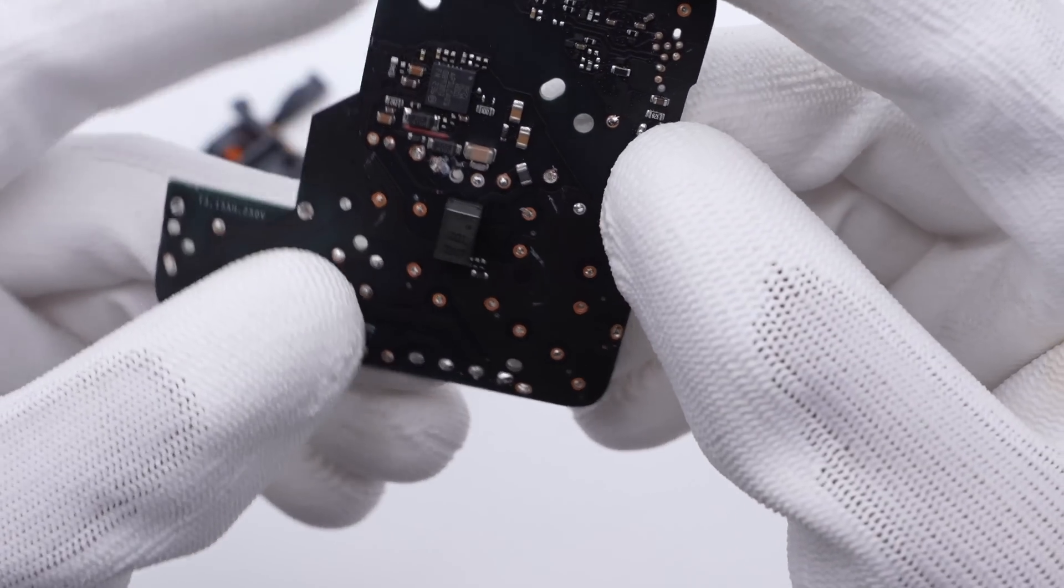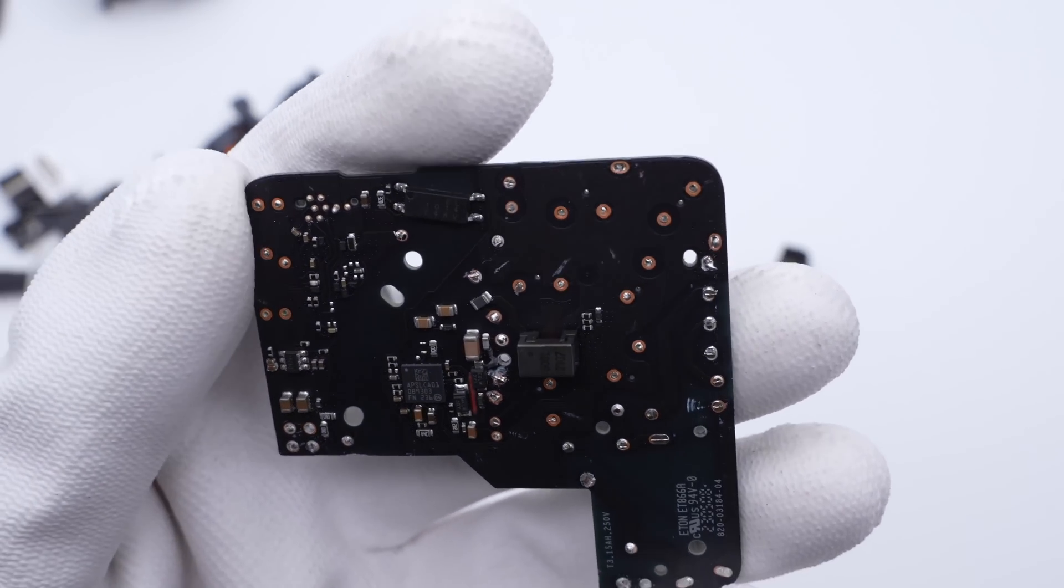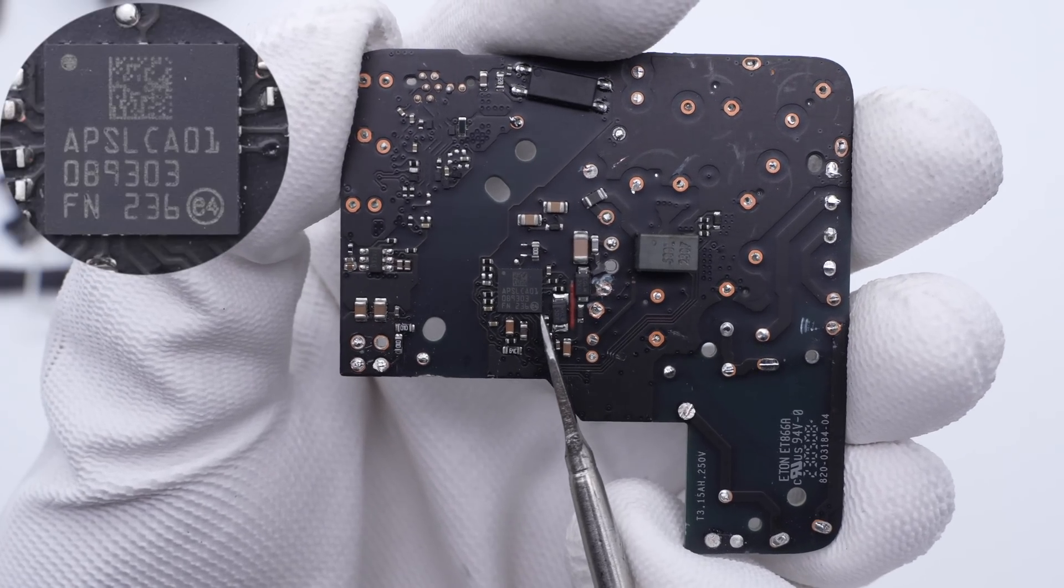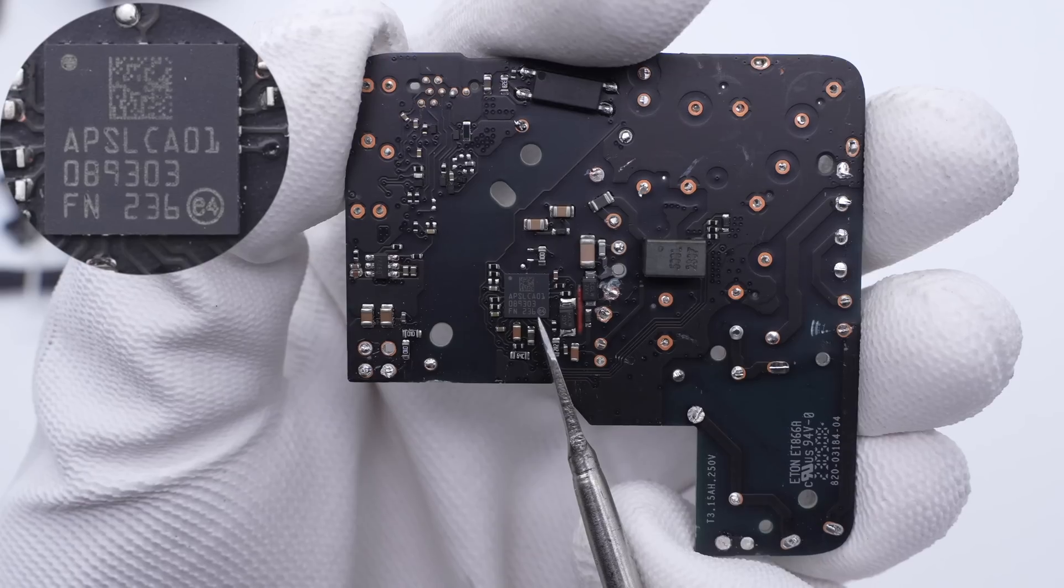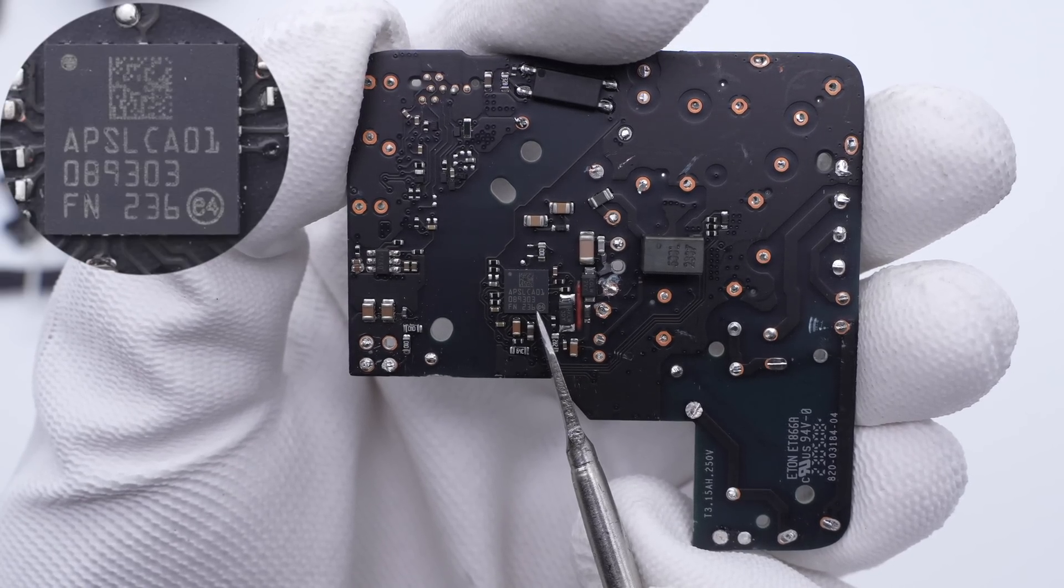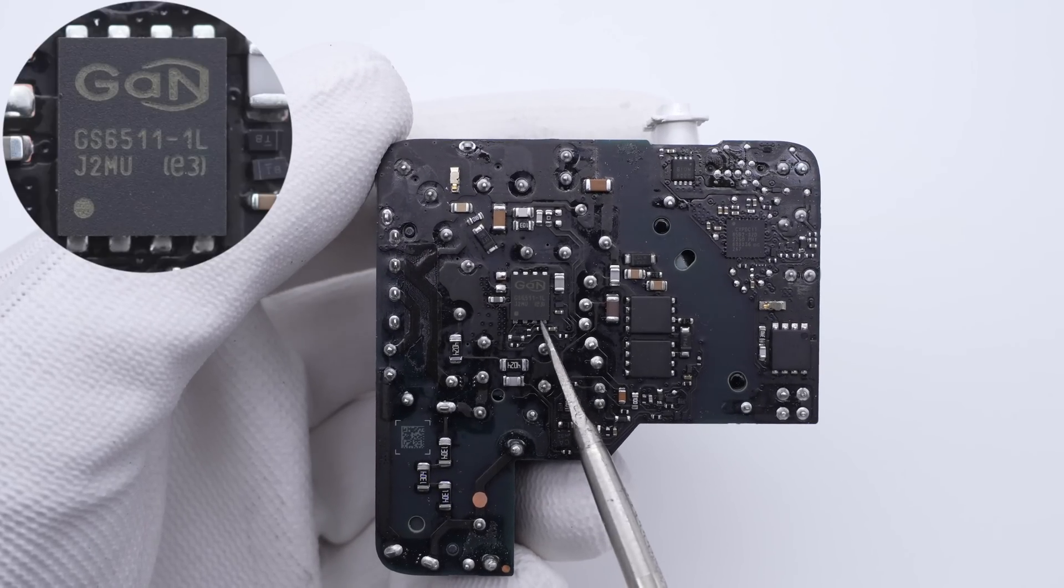After removing all plug-in components on the front, we can find some chips under them. The main control chip is customized by Apple and marked with APSLC-A01. We have seen this chip in many Apple original chargers.